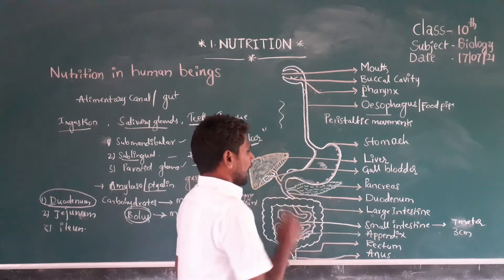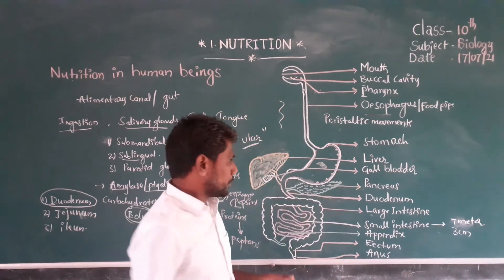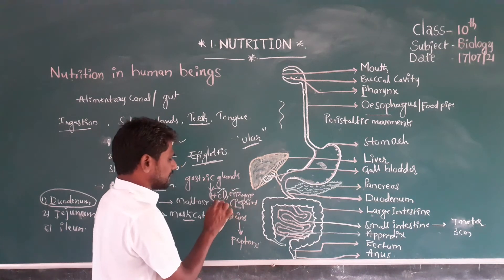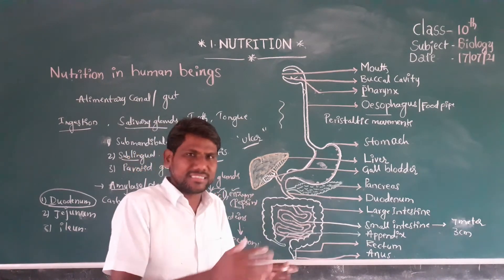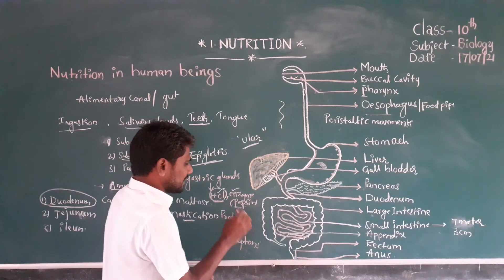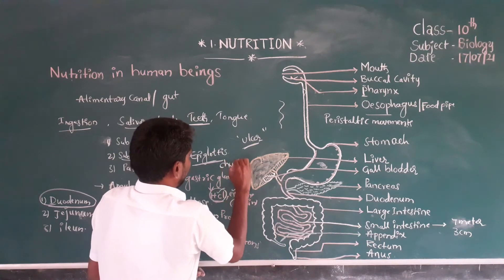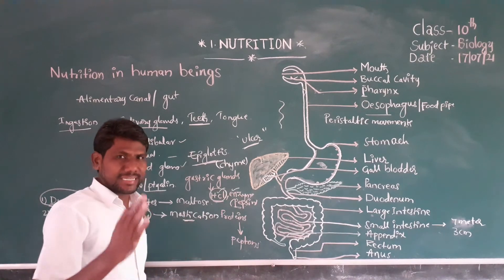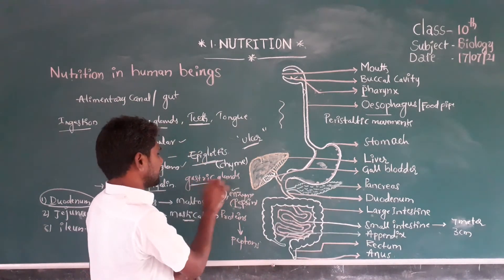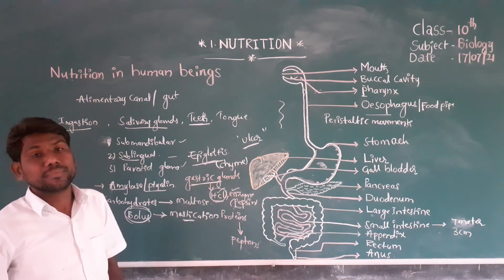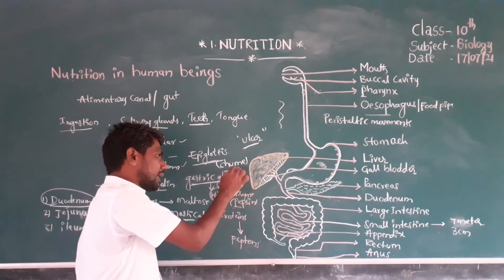Before the food particle enters the small intestine, in the stomach, due to hydrochloric acid and the enzymes, the food becomes partially digested. This partially digested food mixed with gastric juice is called chyme. The partially digested food now enters the small intestine.